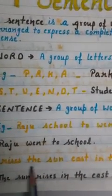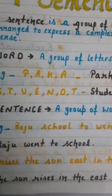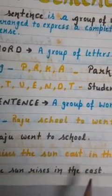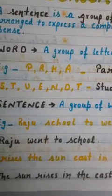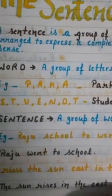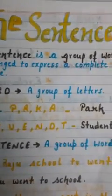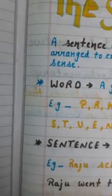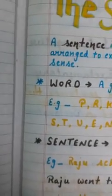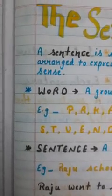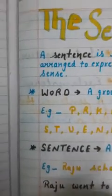Jumbled words are given again, but that doesn't make it a sentence. When we unscramble them: 'The sun rises in the east' — now it has become a proper sentence. So, a sentence is a group of words arranged to express a complete sense, conveying a proper message with words arranged in the correct order.